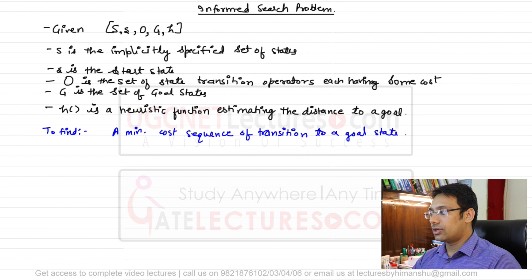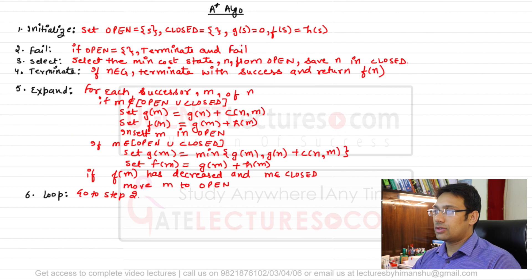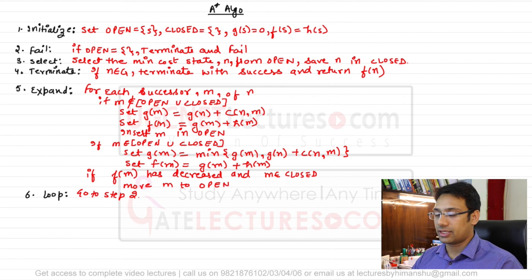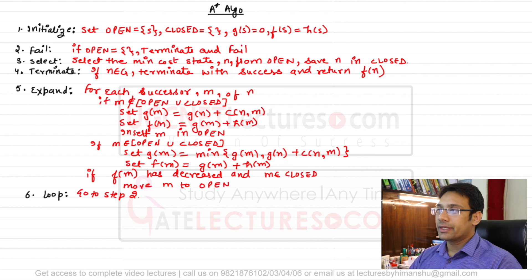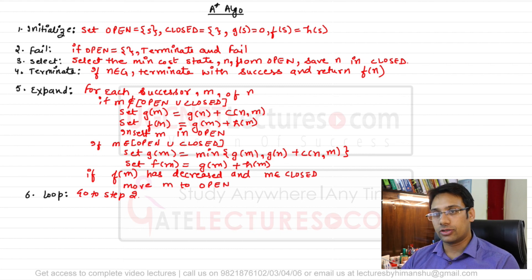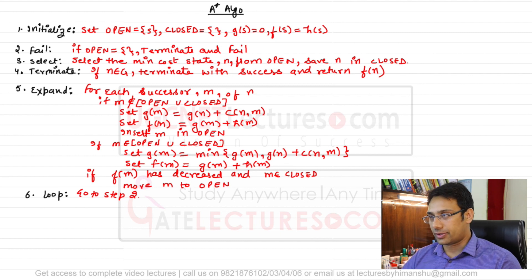Based on the informed search problem, we introduce the A* algorithm. The A* algorithm is not practically implementable — it is just a theoretical implementation. The practical simplified version is the best-first search algorithm, which is a simplified version of A*. We will also cover the AO* algorithm, best-first search, steepest hill climbing, and hill climbing algorithms.